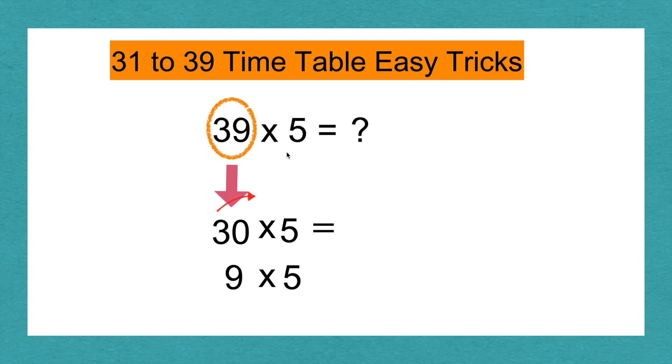3 times 5 equals 15. And then I add the 0. 30 times 5 equals 150. 9 times 5 equals 45.